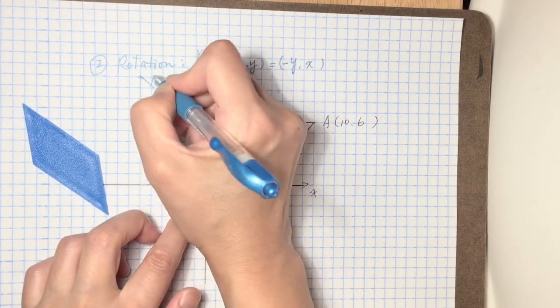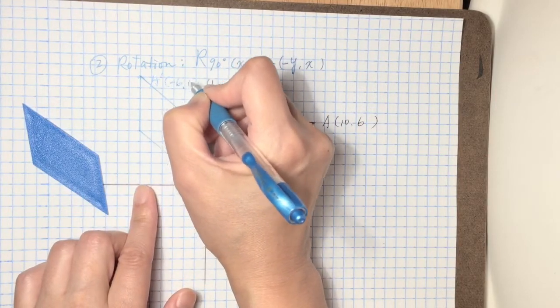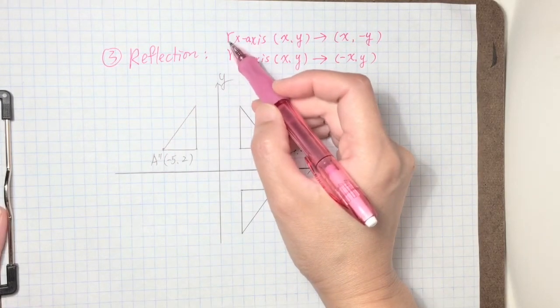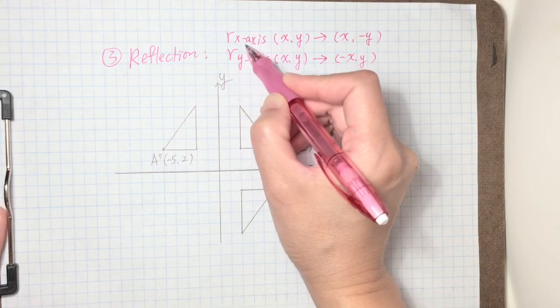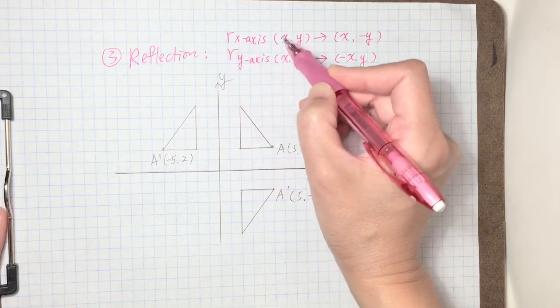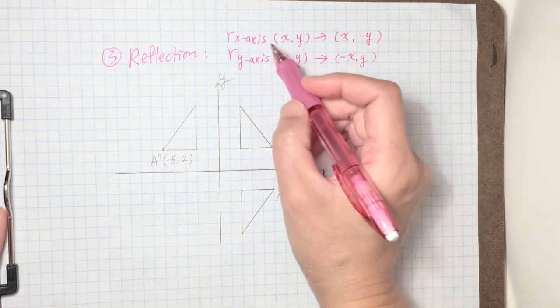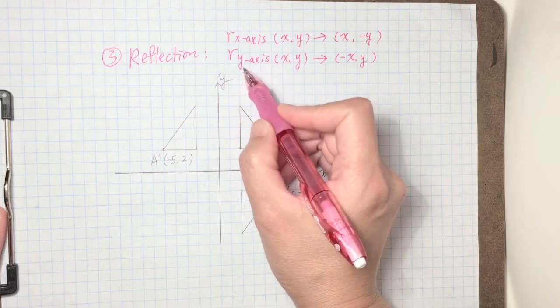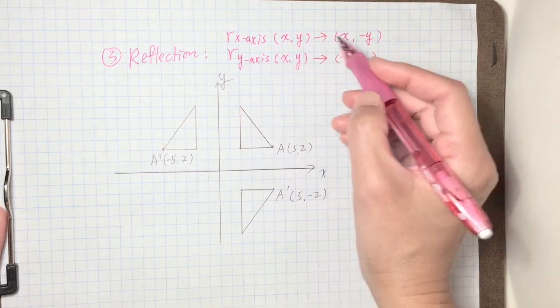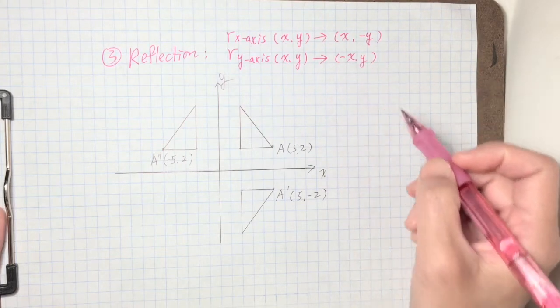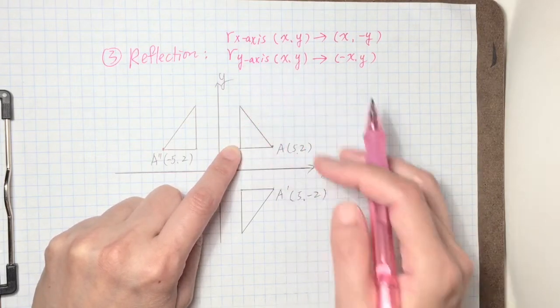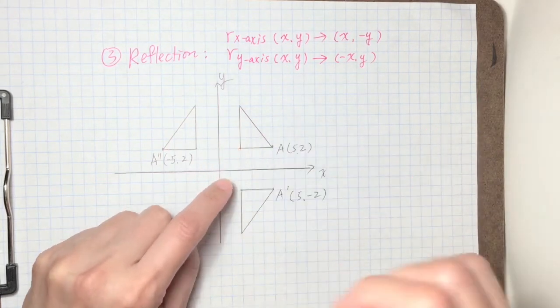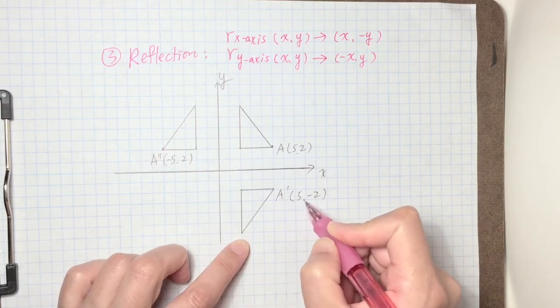Number three, reflection. We use the lowercase R stand for reflection and then you're going to put the symmetry line after that and the point X and Y. So your new image will become X and negative Y if your symmetry line is Y axis. If X axis, then is going to change into negative X and Y. So here in this triangle you flip with the X axis, then it's going to flip horizontally down, so your new A point is five, negative two. Your original A is five, two.